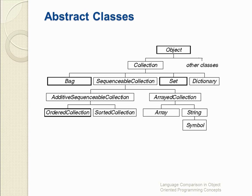The abstract classes — Collection, SequenceableCollection, AdditiveSequenceableCollection, and ArrayedCollection — provide a common set of messages to their subclasses. Each subclass provides its own code to override the skeleton method. This skeleton method is defined as the common protocol to all the subclasses but does not provide a common implementation.